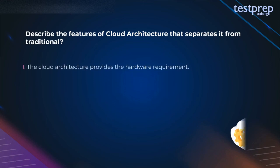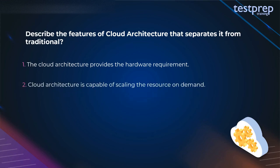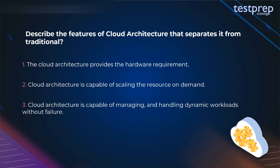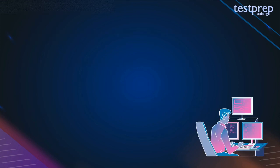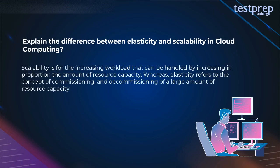Question 41: Describe the features of cloud architecture that separate it from traditional systems. First, cloud architecture provides hardware requirements. Second, it is capable of scaling resources on demand. Third, it is capable of managing and handling dynamic workloads without failure. Question 42: Explain the difference between elasticity and scalability in cloud computing. Scalability handles increasing workloads by increasing the amount of resource capacity proportionally, whereas elasticity refers to the commissioning and decommissioning of large amounts of resource capacity.